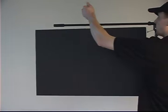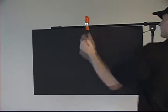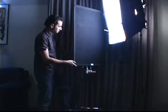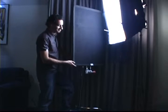A flag can be as simple as a piece of black foam core or artboard clamped to a stand, or a professional flag made of cloth or metal. An interesting technique is using a flag to cut light to an actor's face to simulate light coming in through a window.